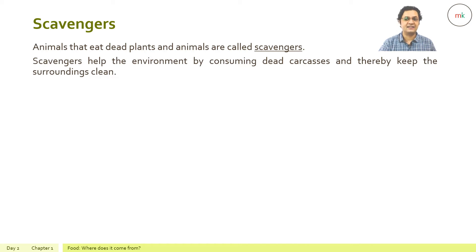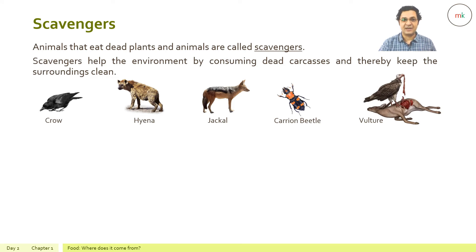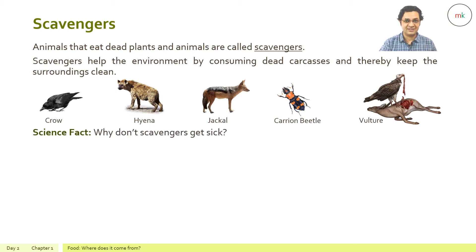Scavengers help the environment by consuming dead carcasses and thereby keep the surroundings clean. Examples include crow, hyena, jackal, carrion beetle, and vulture. An important question: despite eating rotten and deteriorated flesh of dead animals, why don't scavengers get sick? The answer is in their genes, which give them super strong stomachs and immune systems.